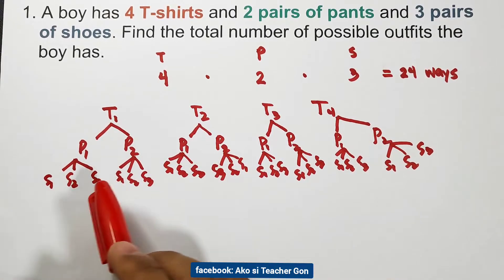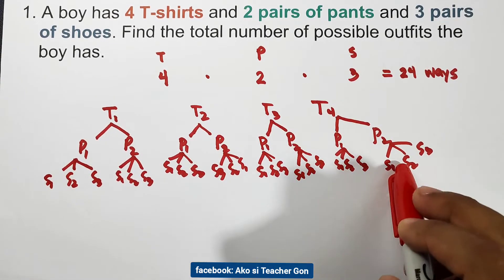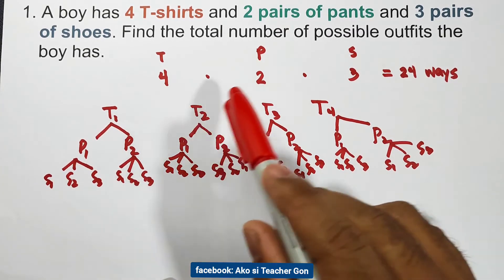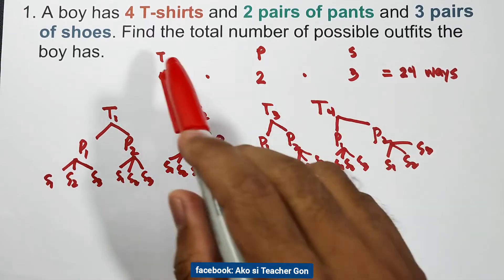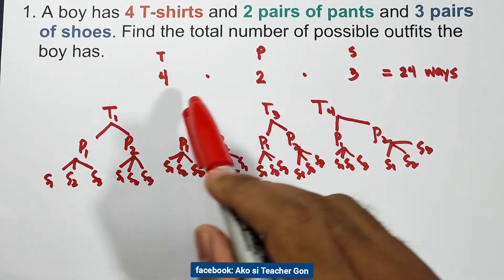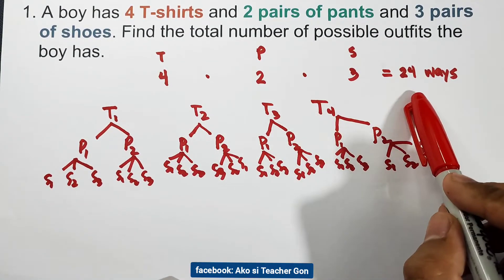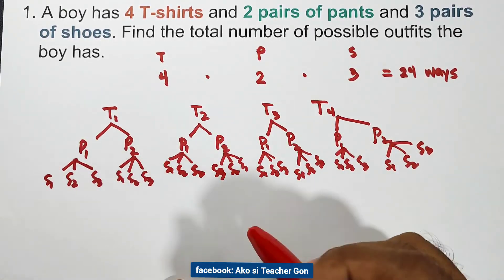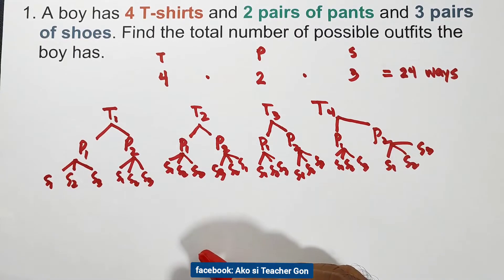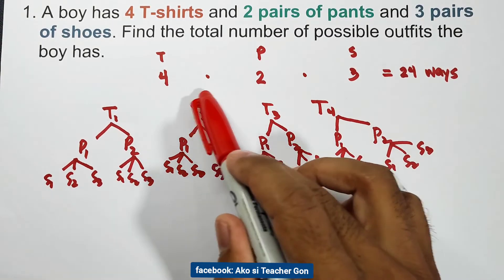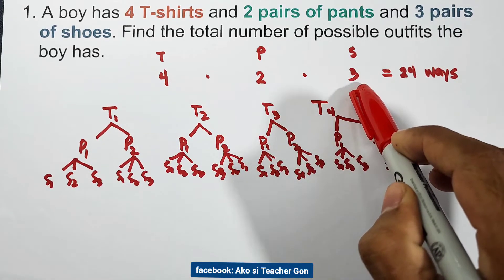So instead of using a tree diagram or actual counting, we can use the fundamental counting principle by multiplying the given choices: four t-shirts, two pants, three shoes — multiply to get 24 ways or possible outfits. It's much faster than actual counting, which is why the fundamental counting principle is the easiest way to find the number of possible outcomes.